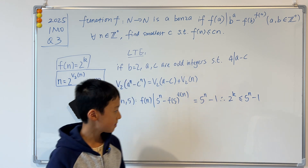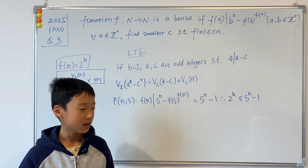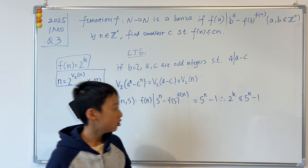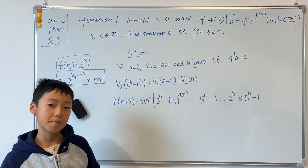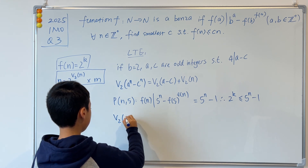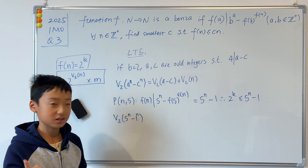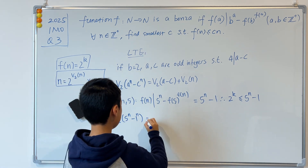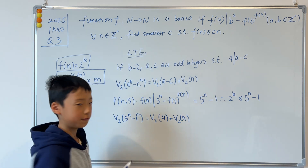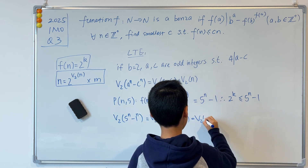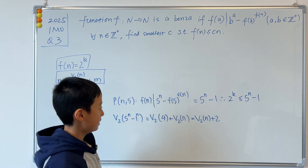Since we want to express 2^k as a power of 2, we take v_2(5^n − 1). Rewriting as 5^n − 1^n, and applying the LTE lemma, this equals v_2(5 − 1) + v_2(n) = v_2(4) + v_2(n) = 2 + v_2(n).